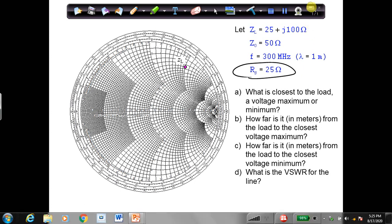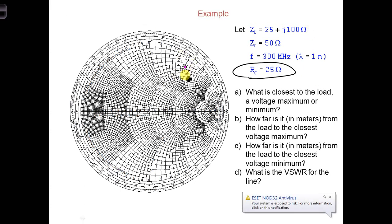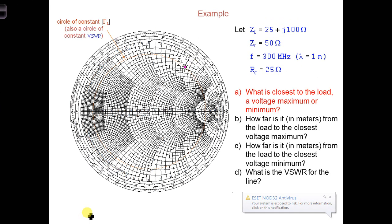The normalized load impedance is already plotted here. First we should mark the circle of constant reflection coefficient magnitude, or the circle of constant VSWR. That's the orange dotted circle here.